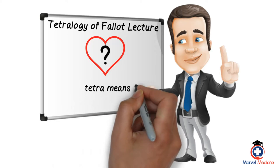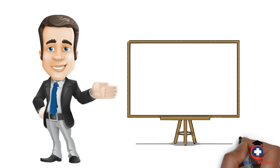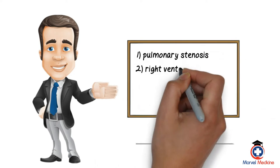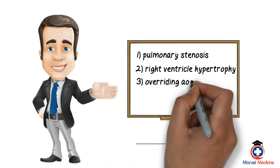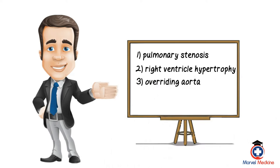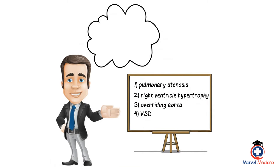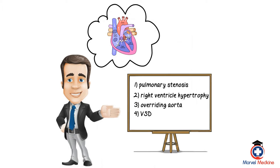Tetra means four, so that's four things you need to remember about it. Number one, pulmonary stenosis. Number two, right ventricular hypertrophy. Number three, overriding aorta. Number four, ventricular septal defect, or VSD. I want you to imagine and picture the direction of blood flow in this heart with those four defects in mind.